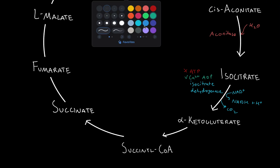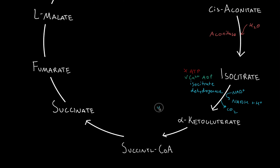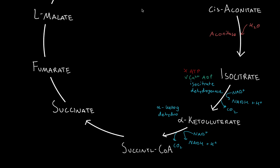Next we have alpha-ketoglutarate, and we need alpha-ketoglutarate dehydrogenase. Same thing: since we have a dehydrogenase, we take NAD+, this results in NADH and our hydrogen ion, and as a byproduct we release CO2. Isocitrate has six carbons, and ketoglutarate has five carbons since we lost one CO2.